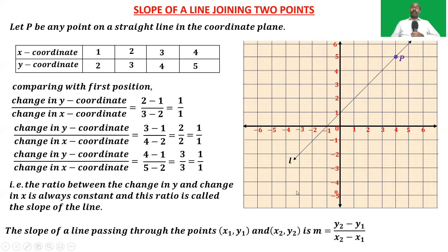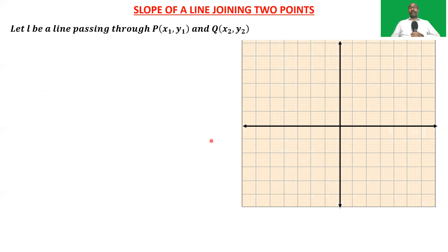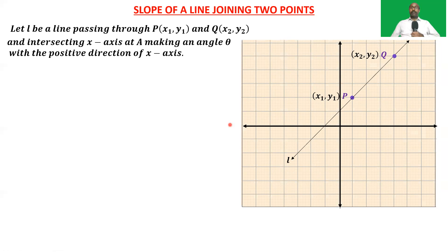Simply, the slope of the line joining two points (x1, y1) and (x2, y2) is (y2 - y1)/(x2 - x1), or we can also write it as (y1 - y2)/(x1 - x2). Here we have one more concept regarding the slope of a line. Let L be a line passing through P(x1, y1) and Q(x2, y2). The slope of line PQ is (y2 - y1)/(x2 - x1). Let the line intersect the x-axis at A, making an angle theta with the positive direction of the x-axis.